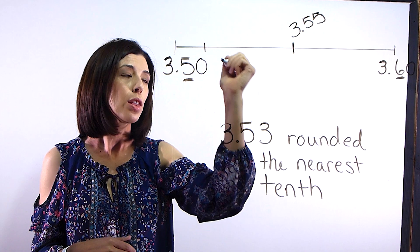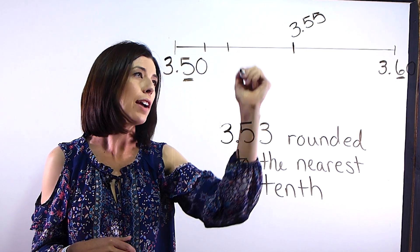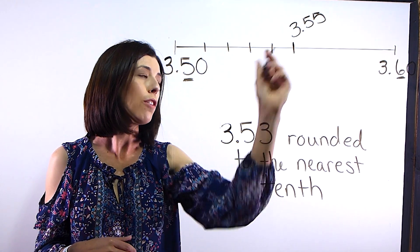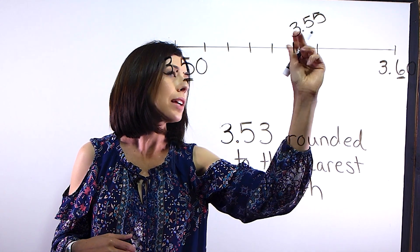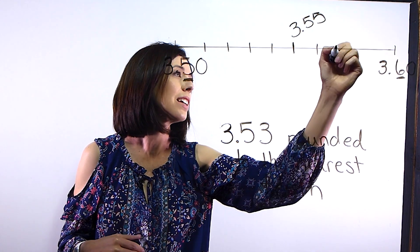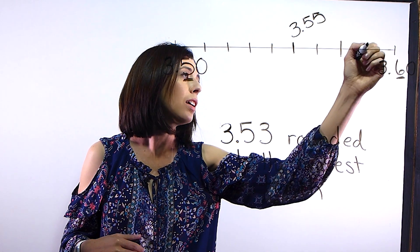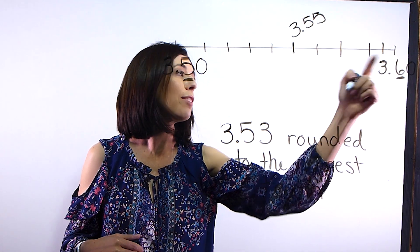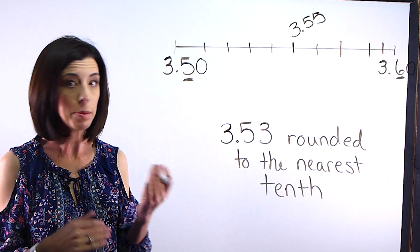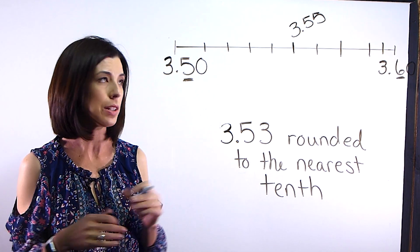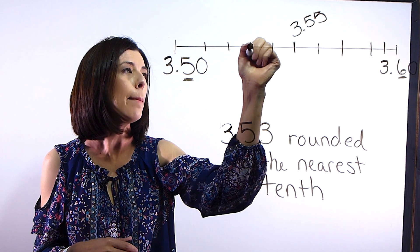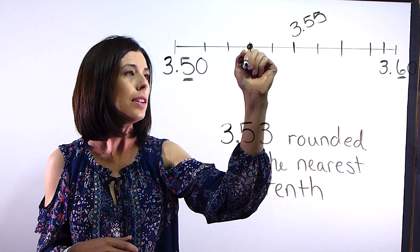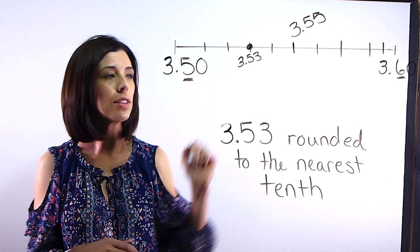And if I'm thinking about this, I can think about this as 3.51, 3.52, 3.53, 3.54, here's 3.55, 3.56, 3.57, 3.58, 3.59, and 3.60 or 3 and 60 hundredths. So I'm going to go ahead and put this on the number line and I know it's going to go about right there. There is going to be 3 and 53 hundredths.